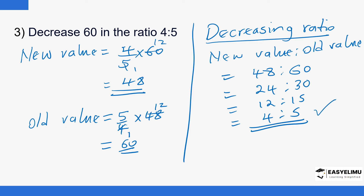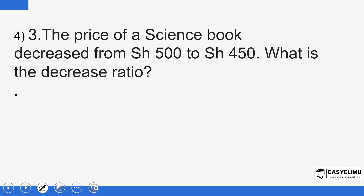Now we have a word problem — question four. The price of a son's book decreased from 500 to 450 shillings. What is the decrease ratio? When you express the ratio as new value to old value and it forms a proper fraction, that confirms it is indeed a decreasing ratio.